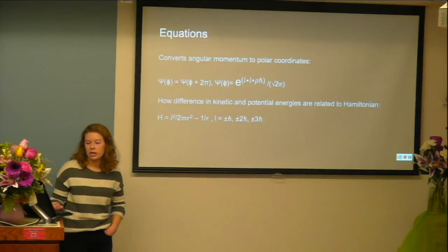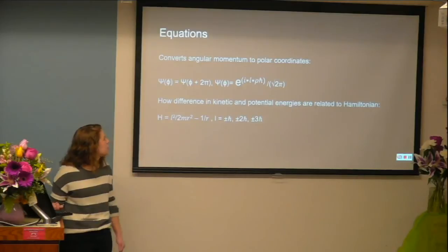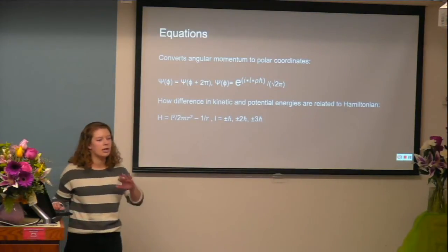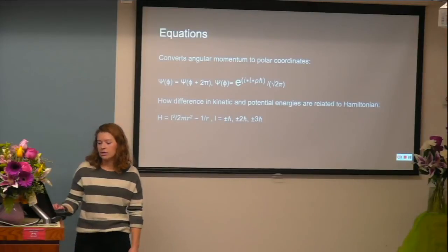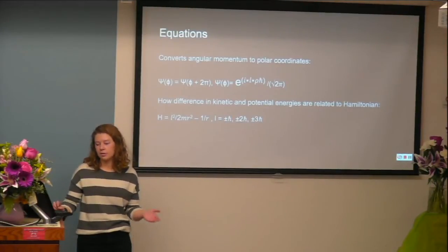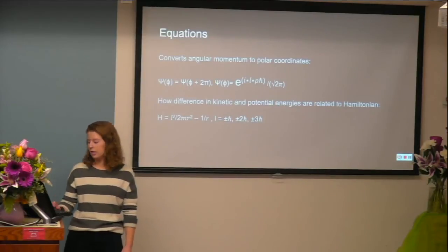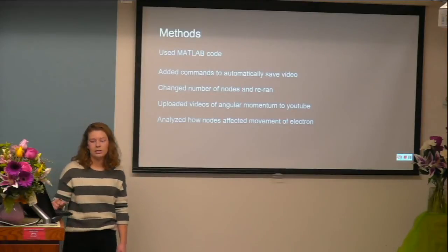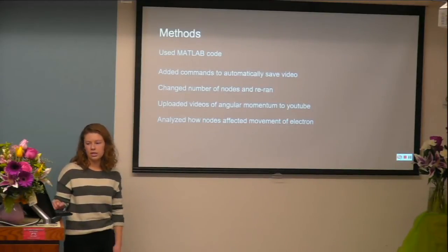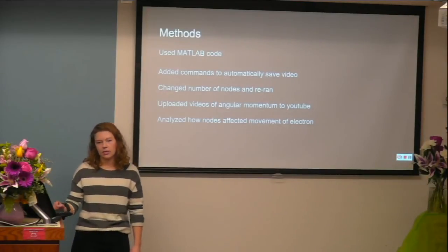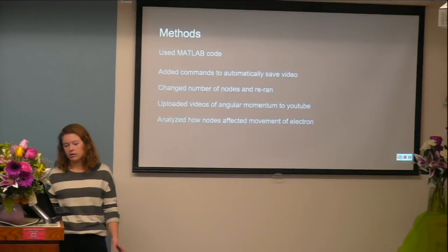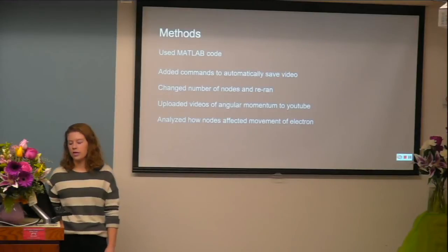Some of the equations I used: the first equation converts angular momentum to polar coordinates so we could plot the angular momentum in a way that we can understand it on the Bohr model. The second equation shows the difference between kinetic and potential energies and how they relate to a Hamiltonian. My methods: I used a MATLAB code written by Dr. Killen, added commands to automatically save videos, changed the numbers of nodes, and re-ran the code to see how nodes change the angular momentum of the electron movement, then analyzed how those nodes affect the movement.